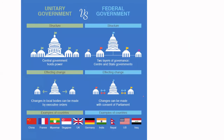To understand it further, if we look at the structure, in a unitary form of government the central government holds all the power. Whereas, in a federal form of government there are two layers of governments — that is your central and the state government.